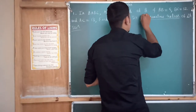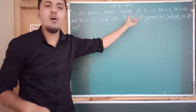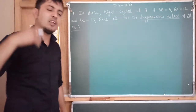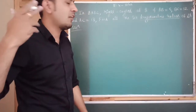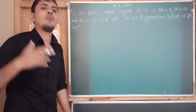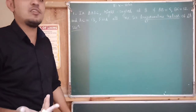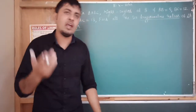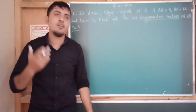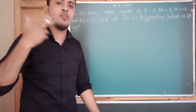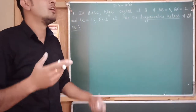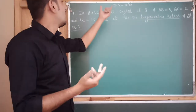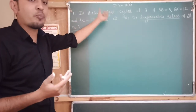They have asked us to find out all six trigonometric ratios of angle A. In the last video we already discussed what the six trigonometric ratios are: sine theta, cos theta, tan theta, cot theta, sec theta, and cosec theta. We have to find out all those ratios.